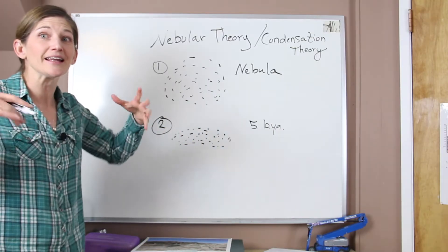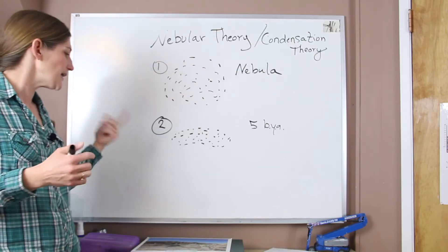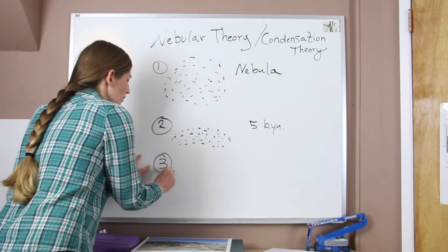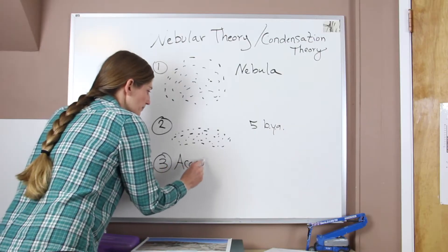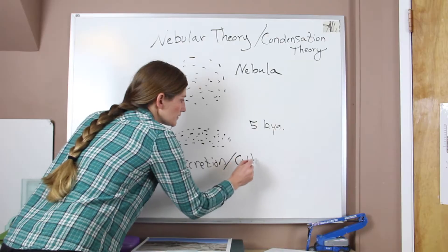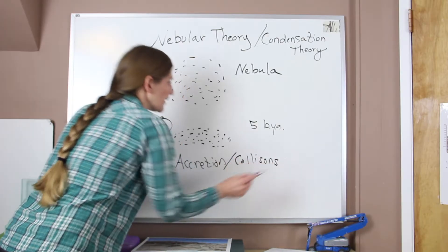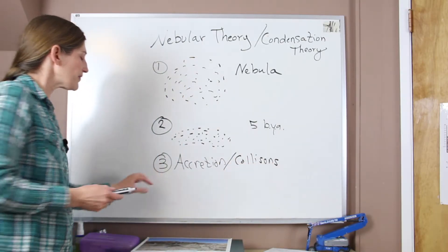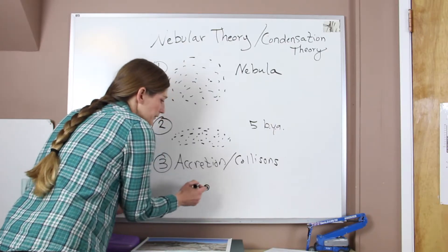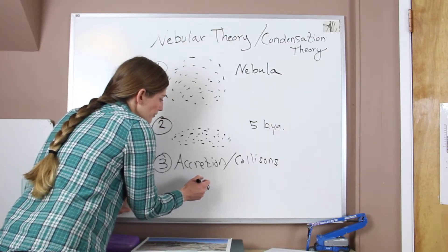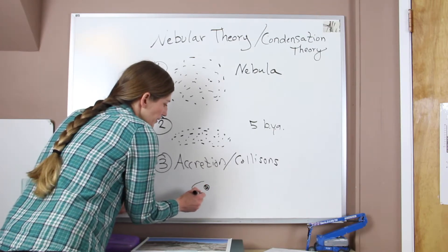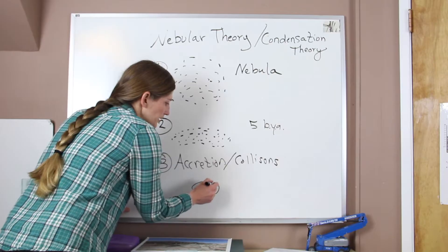It's going to start to collide and combine and it accretes and grows into our protoplanets. So step three is where we have accretion and or collisions. And so if we were to start thinking about what this looks like, we would have our protosun in the middle. And around that we have bodies, kind of protoplanets, we'll draw them, that are moving around, spinning.